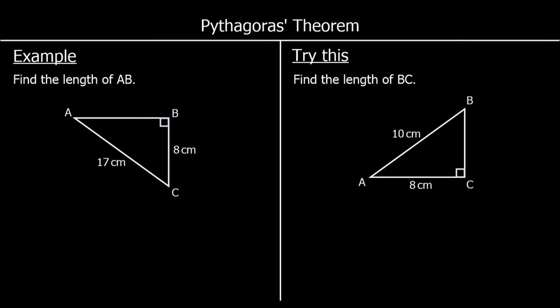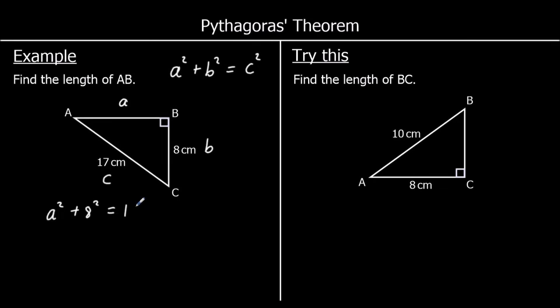Here we have a different example. This time we're working out one of the shorter sides. We've been given the hypotenuse and we're working out one of the shorter sides. We can still use Pythagoras' theorem — it's still true that a squared plus b squared equals c squared. If we substitute into our formula, we get a squared plus 8 squared equals 17 squared. To get a squared by itself, we take away 8 squared from both sides, so a squared equals 17 squared minus 8 squared.